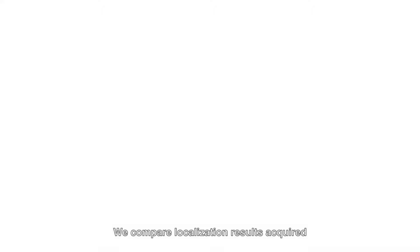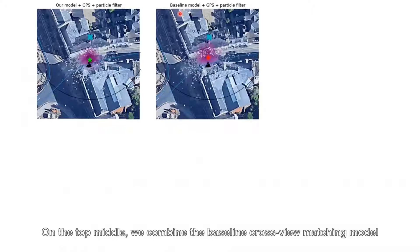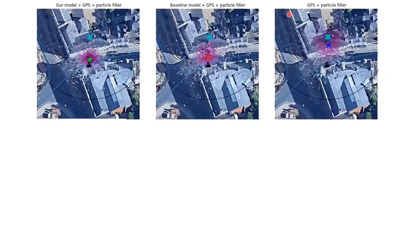We compare localization results acquired by different implementations of particle filtering. On the top left, we combine our cross-view matching model with GPS using a particle filter. On the top middle, we combine the baseline cross-view matching model with GPS using a particle filter. As a reference, we show on the top right the case without cross-view matching.